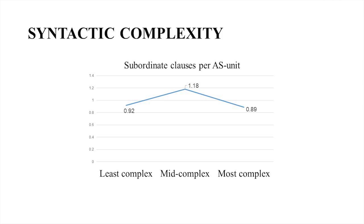But look at the results. One of her linguistic outcome measures was subordinate clauses per AS unit. For the first clip, the mean was 0.92 subordinate clauses per AS unit. For the second, it did increase — they had to use more complex language to explain that accident. But with the third clip, the measure dropped back down. What did they do? Did they just not notice the other cars coming down the hill? They actually just ignored a lot of what happened in clip three. This is one of the problems — we can come up with pretty ideas about how to increase complexity, but if it's not going to work in the classroom, we've got to find other ways.